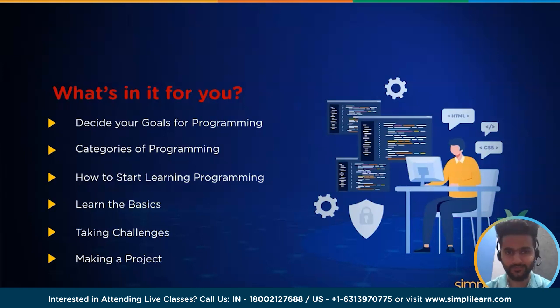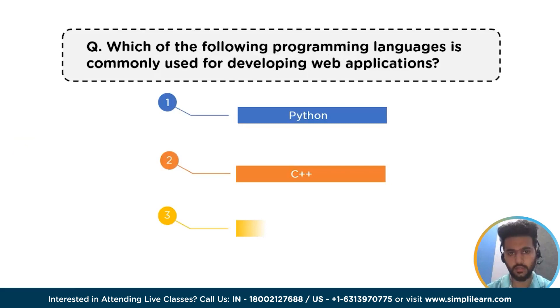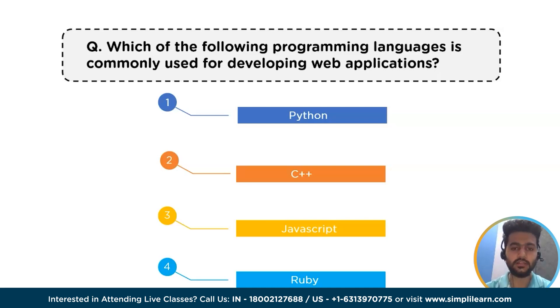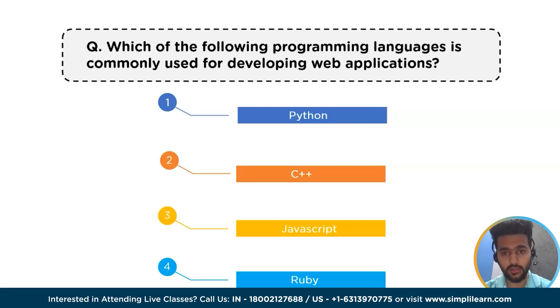Before moving forward, let me ask you a quick question. Which of the following programming languages is commonly used for developing web applications? A) Python, B) C++, C) JavaScript, or D) Ruby. You can pause this video and answer in the comment section below.